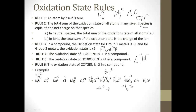So, plus one on the hydrogen, which means that nitrogen is going to have to be plus five. For OH minus, the oxygen is minus two and the hydrogen is plus one. Minus two plus one is negative one, which is the charge on the polyatomic ion. For H3O plus, the oxygen is minus two and each hydrogen is plus one. So we have plus three minus two equals plus one, which is the charge on the ion.